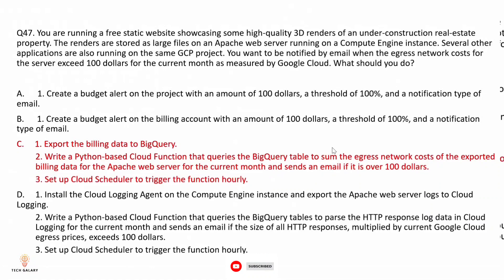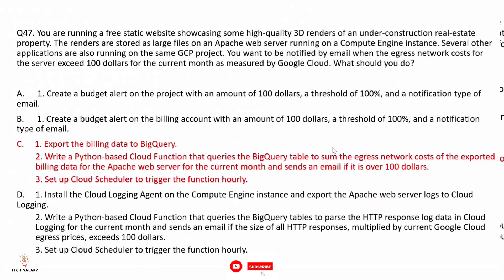Option C: export the billing data to BigQuery, write a Python-based Cloud Function that queries the BigQuery table to sum the egress network costs of the exported billing data for the Apache web server for the current month, and send an email notification if the cost exceeds $100. Set up Cloud Scheduler to trigger the function regularly. Exporting billing data to BigQuery and analyzing egress charges is the best option for this use case.